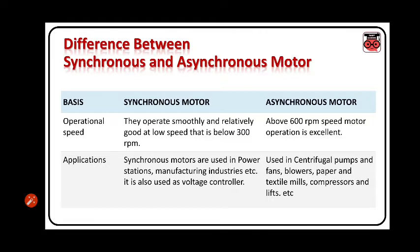Next is operational speed. Synchronous motors operate smoothly and are relatively good at low speed, that is below 300 RPM. Whereas in asynchronous motor, above 600 RPM speed, motor operation is excellent. Applications: synchronous motors are used in power stations, manufacturing industries, etc. Whereas asynchronous motors are used in centrifugal pumps and fans, blowers, paper and textile mills, compressors, and lifts, etc.